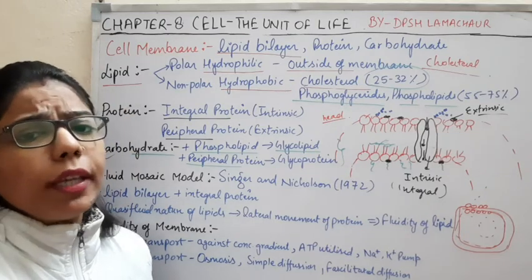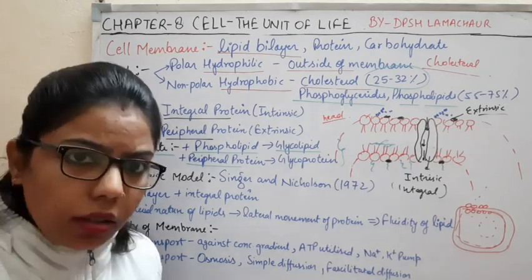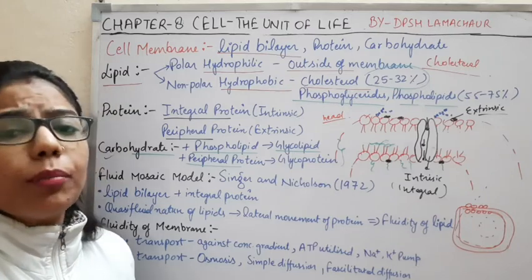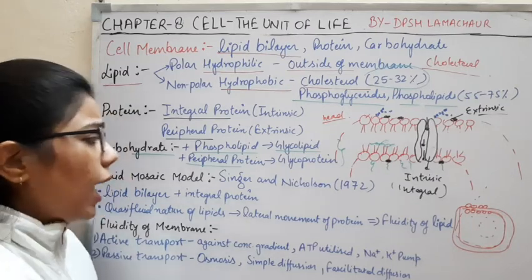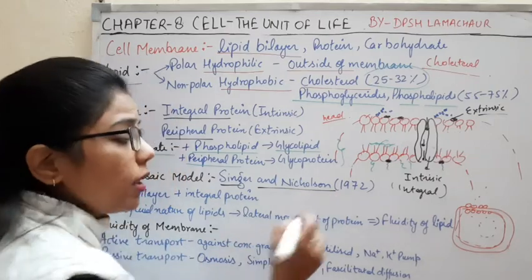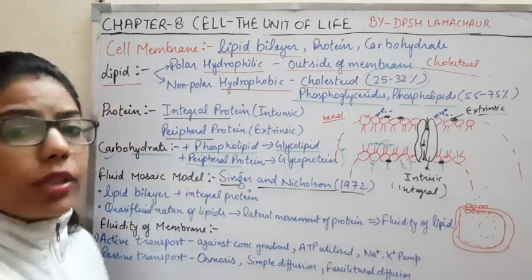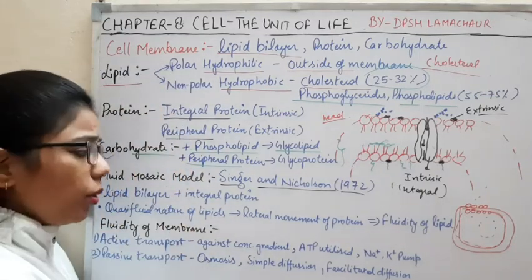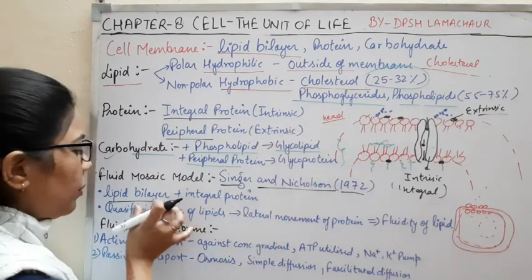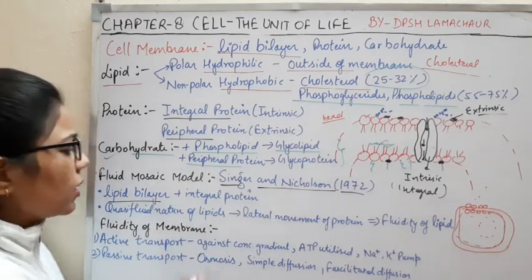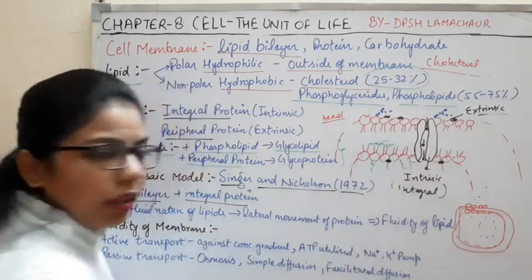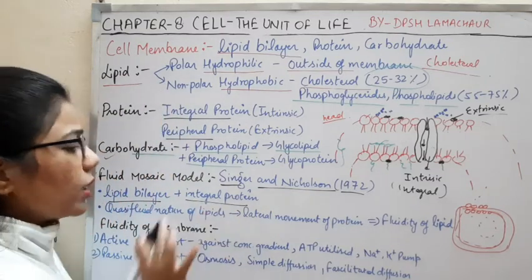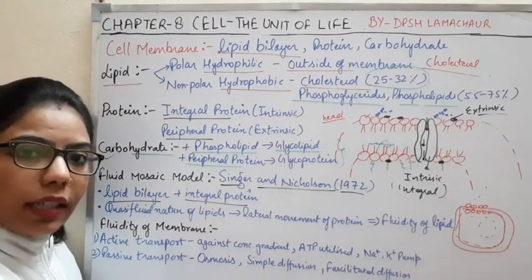Now, one of the theories came here — that is the fluid mosaic model. What is this fluid mosaic model, and who gave it? The answer is Singer and Nicholson, in 1972. They gave the fluid mosaic model and it is the somehow accepted one. According to this theory, they said that this membrane is made up of two layers of lipid — which is correct — and there are some integral proteins, meaning the proteins that are embedded inside, which are known as the integral proteins.